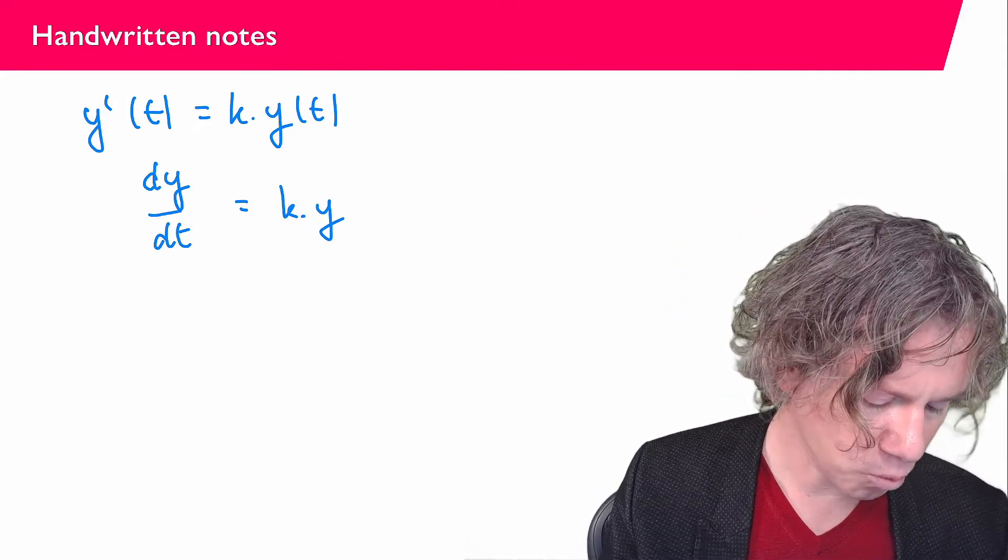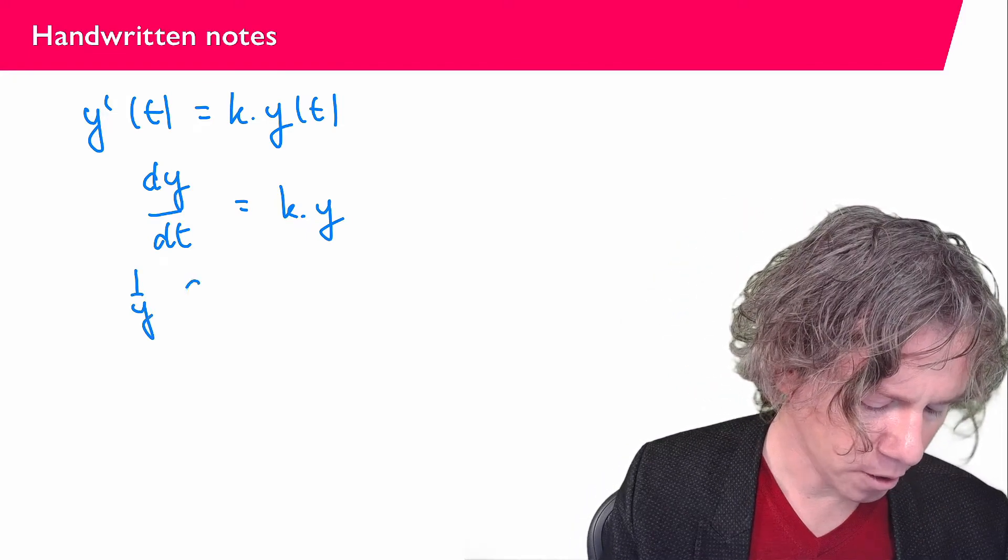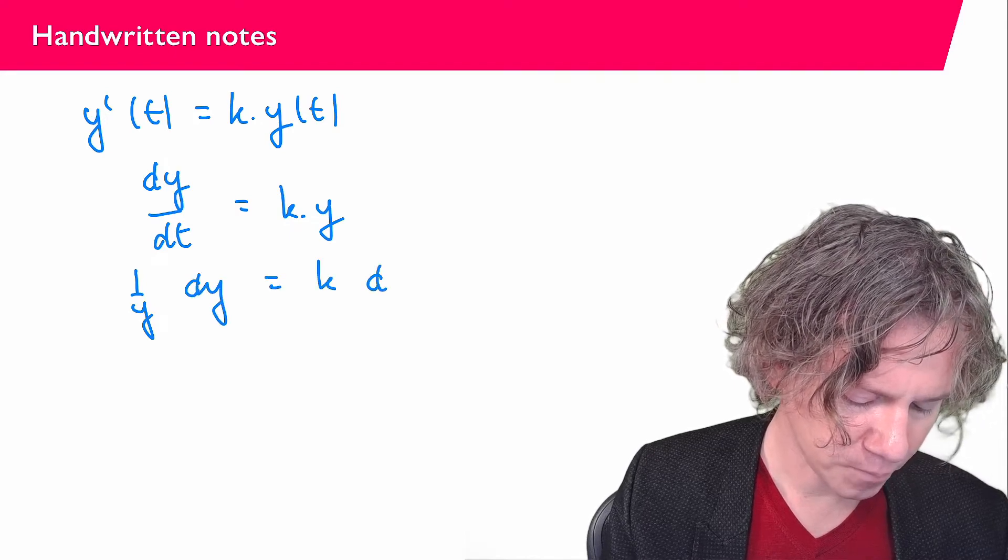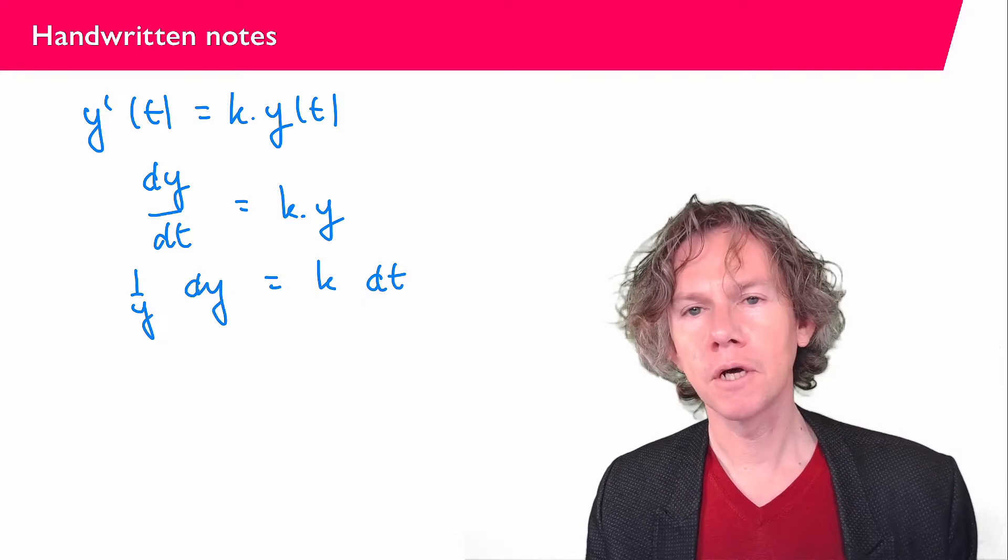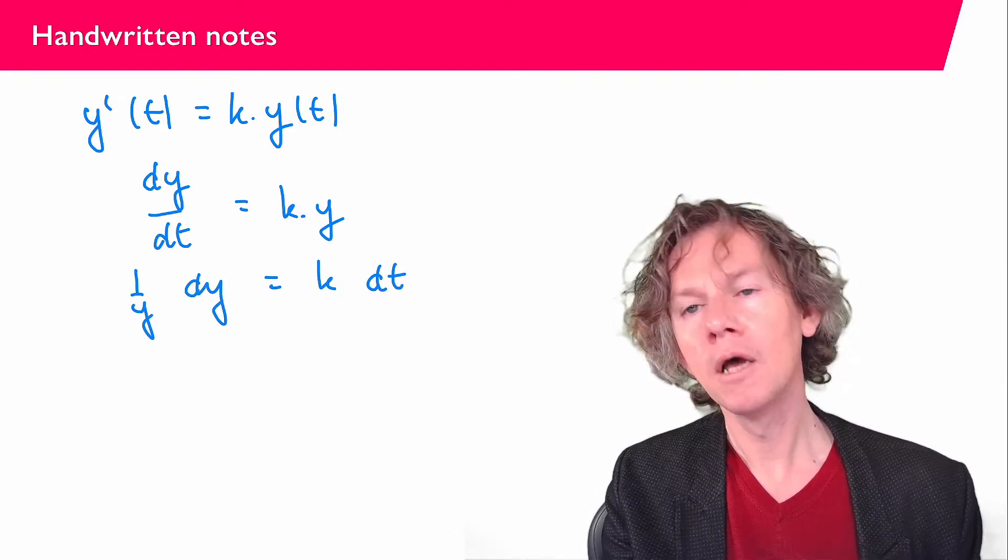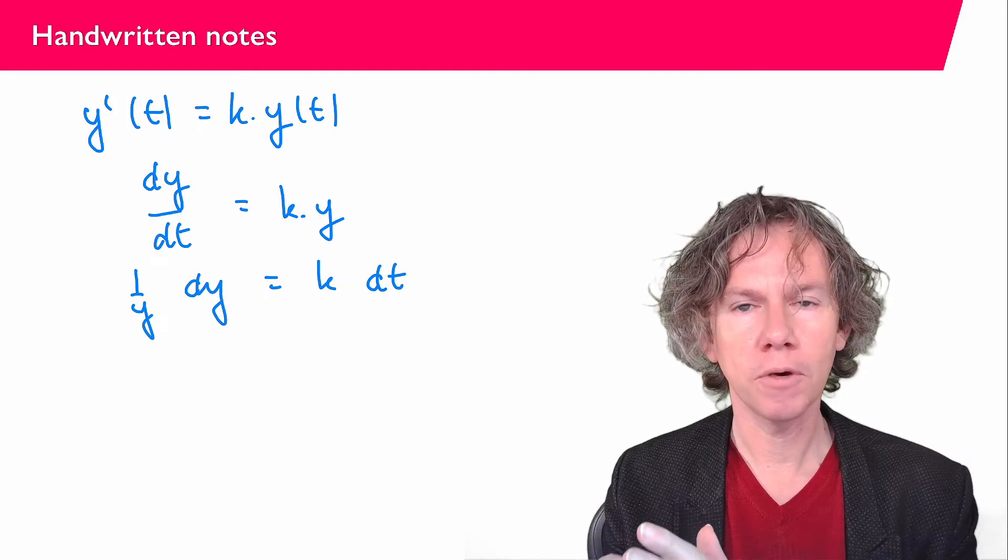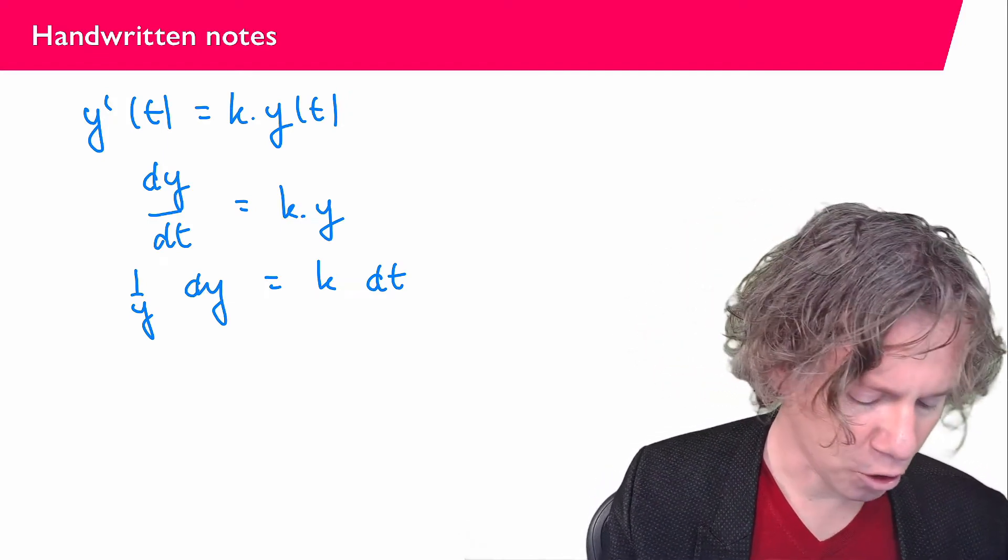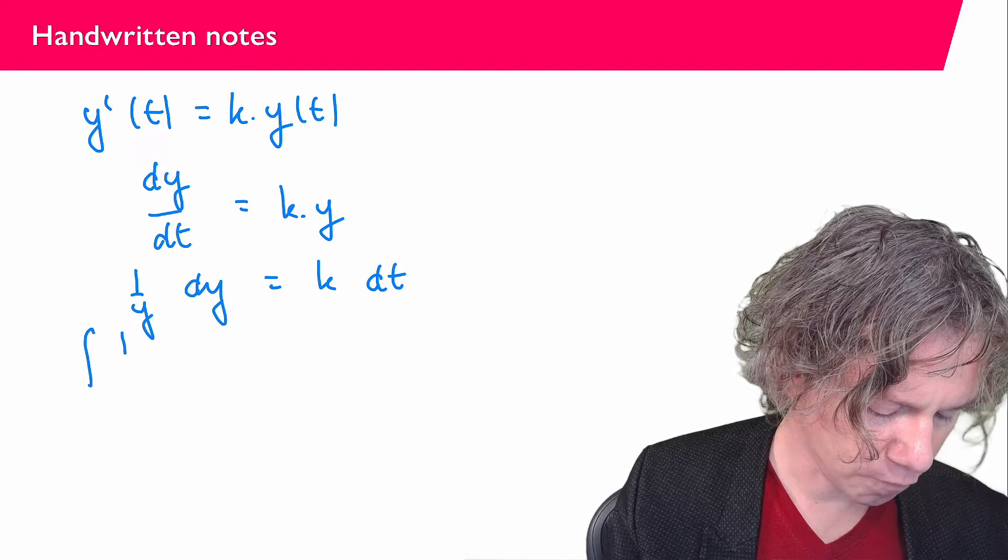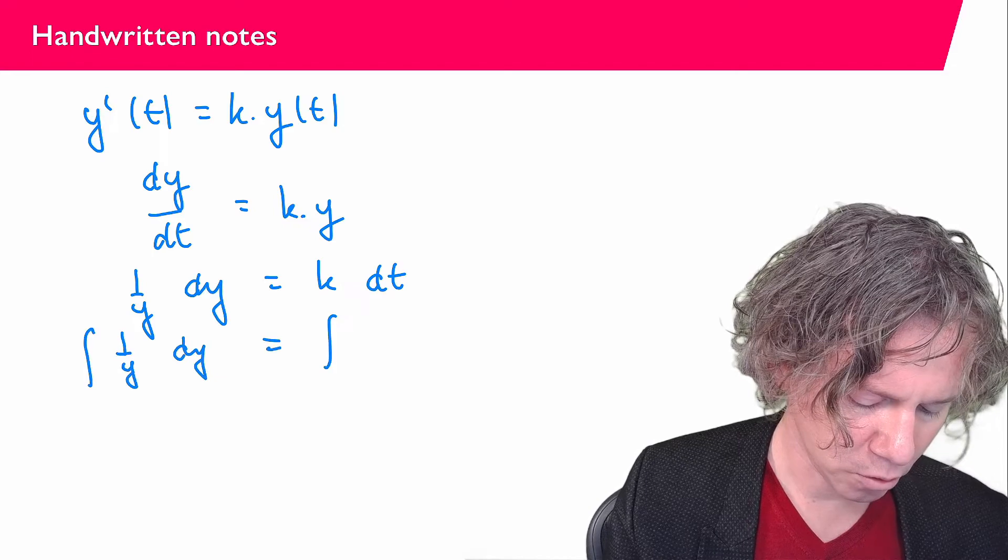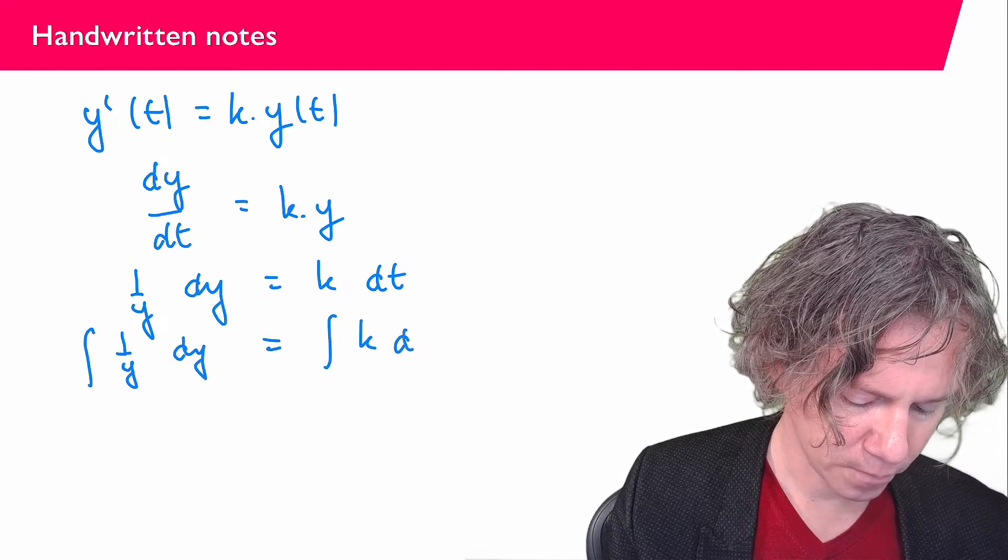I'm rewriting this as (1/y)dy = k dt, and the reason I do that is now that the left-hand side of the equation depends on y only and the right-hand side depends on time t only. So I can integrate on both sides of the equation, and I find that the integral of (1/y)dy equals the integral of k dt.